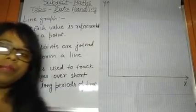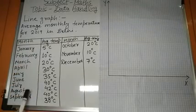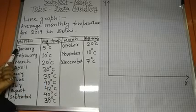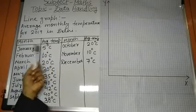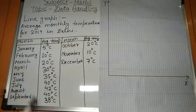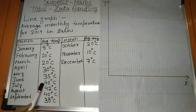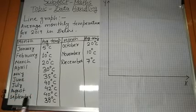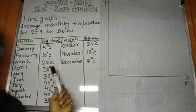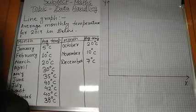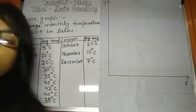Let us take one example. This is the average monthly temperature of Delhi City for year 2019. In January, 5 degrees Celsius. February, 10 degrees. March, 20 degrees. April, 30. May, 35. June, 40. July, 42. August, 40. September, 38. October, 20. November, 10 degrees. And December, 7 degrees Celsius. These are the temperatures of Delhi City for 2019.